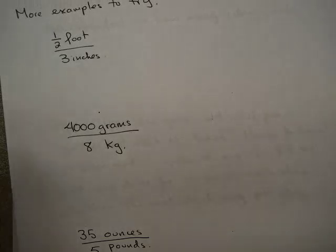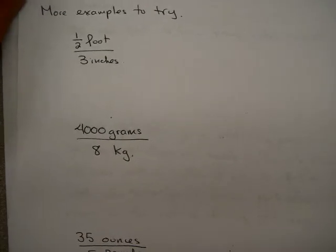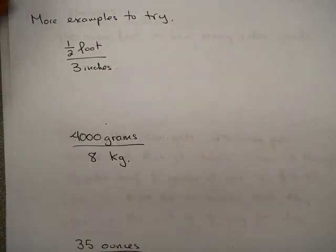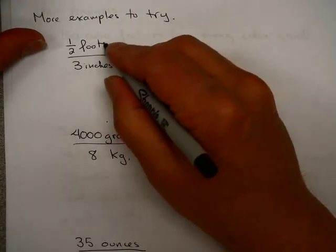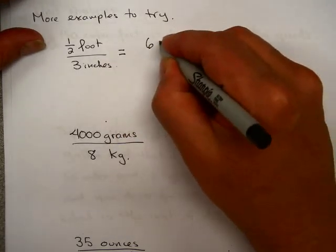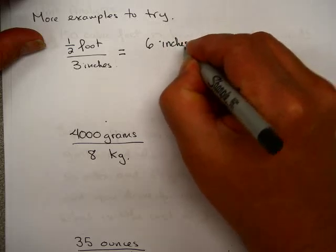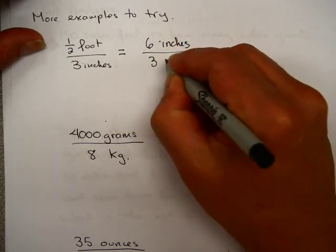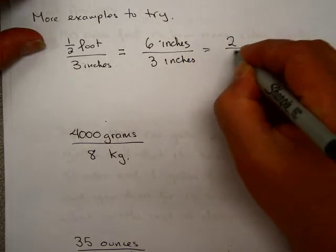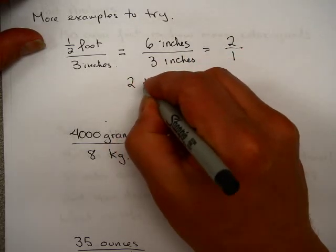Here's some more examples. 1 half foot to 3 inches. I'm going to convert to the lower unit, which is inches. I just happen to know that a half a foot, because there's 12 inches in a foot, is 6 inches. So 6 inches to 3 inches gives me 2 over 1. So that's 2 to 1.